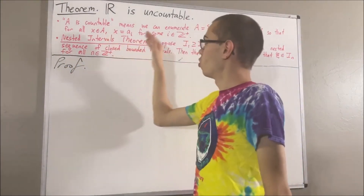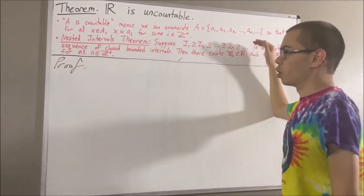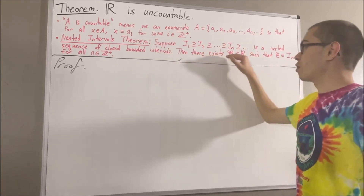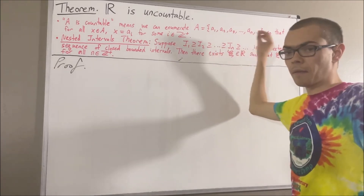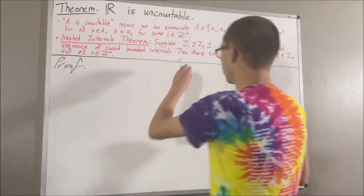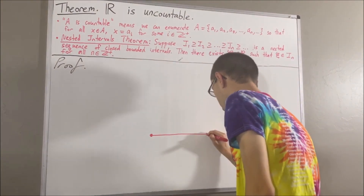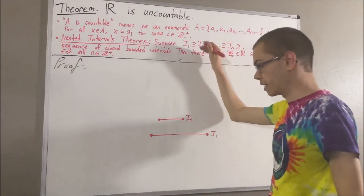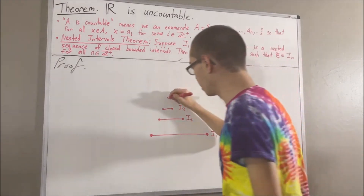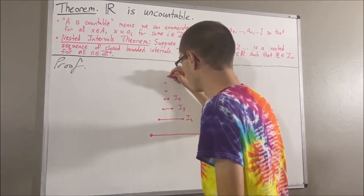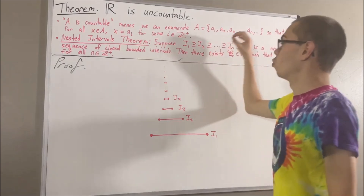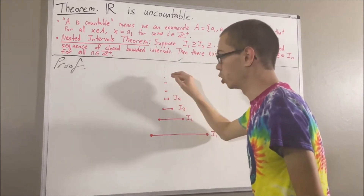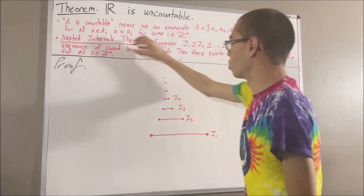We are going to use the nested intervals theorem, which says: if we are given a nested sequence of closed bounded intervals I1, I2, I3, and so on, then there exists a real number that belongs to every single one of these closed bounded intervals. So visually, the intervals are nested inside one another, this sequence goes on forever, but there exists a real number that belongs to every single one of these closed bounded intervals. That is really what this theorem is saying.